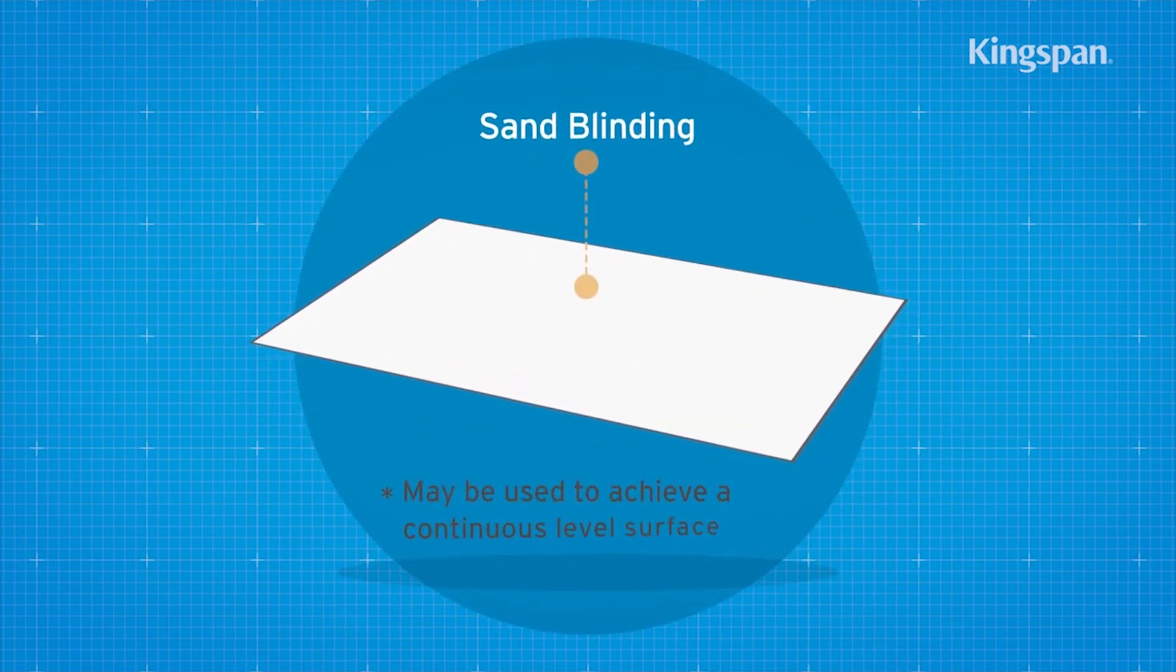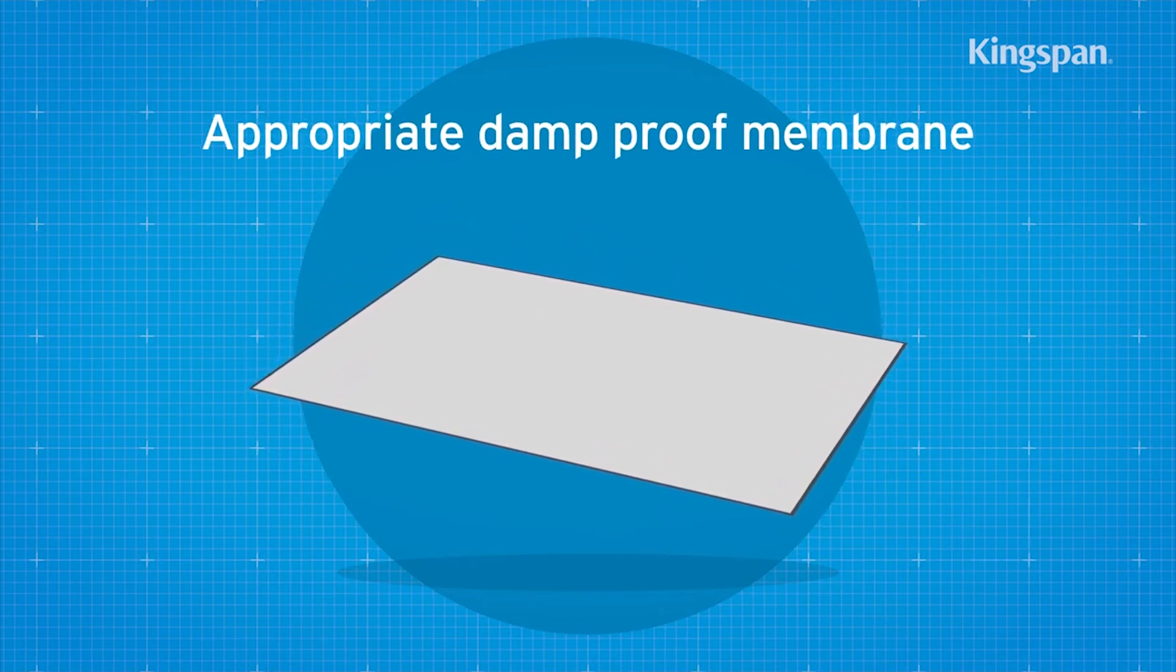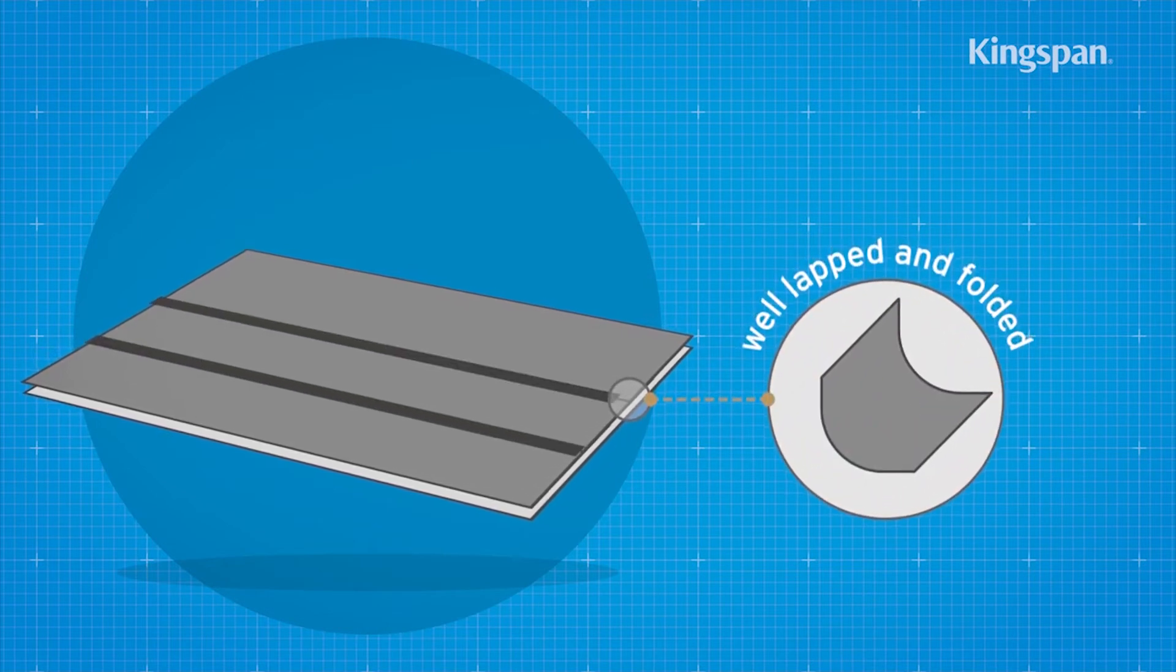A thin sand blinding may be used to achieve a continuous level surface. An appropriate damp-proof membrane should be laid with joints well lapped and folded prior to installing the insulation boards.